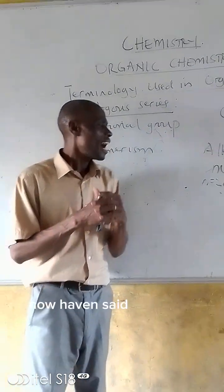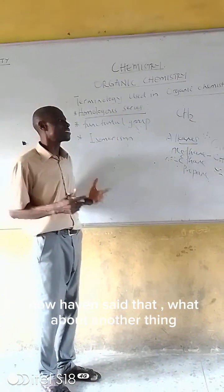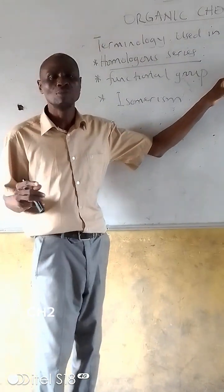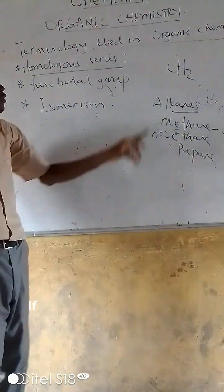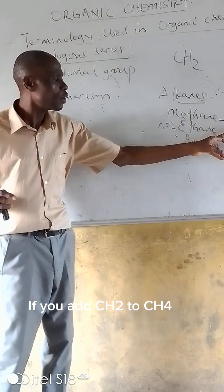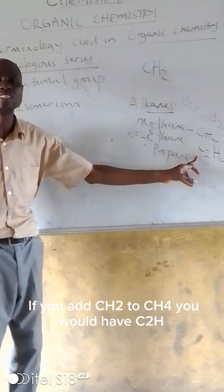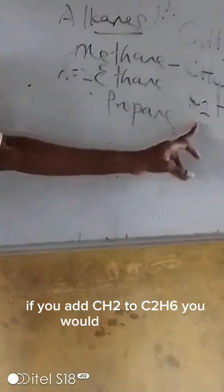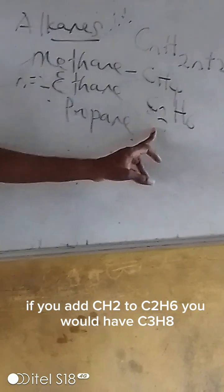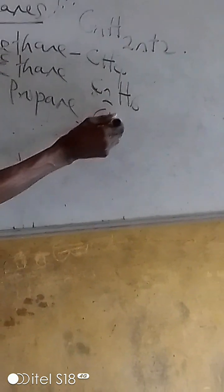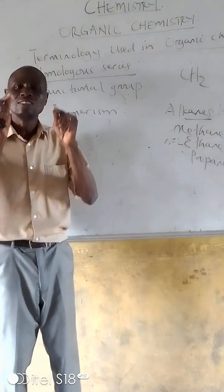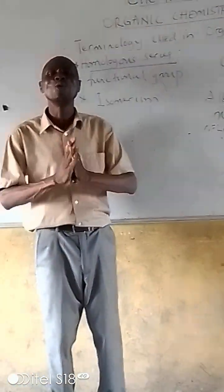What do I mean by each member differing by CH2? If you add CH2 to CH4, we are going to have C2H6. If you add CH2 to C2H6, we are going to have C3H8. So you can see that each member has a difference of CH2. That's why I said they show homology.